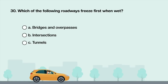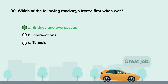Which of the following roadways freeze first when wet? A. Bridges and overpasses. B. Intersections. C. Tunnels. Answer is A: Bridges and overpasses.